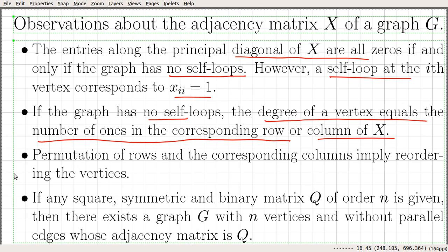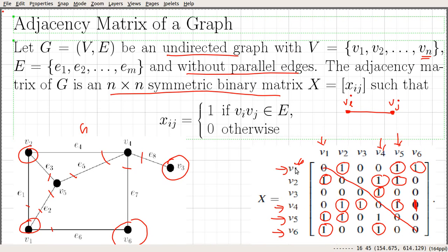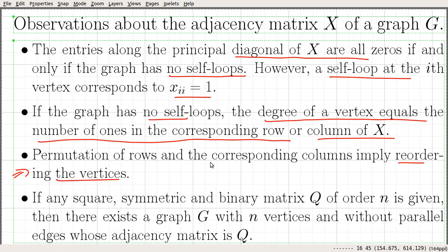We can also see that if you permute a row, that corresponds to simply reordering the vertices. Permutation of a row and the corresponding column implies reordering of the vertices. For example, if you swap the rows and columns for V1 and V5, V5 will come to the first position and V1 will go to the fifth. We can see that it is just a reordering of the rows and columns, and that corresponds to the same graph.